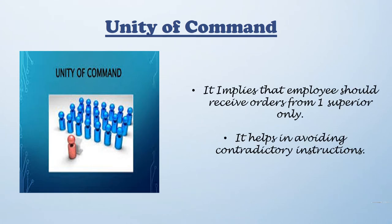Unity of command implies that an employee should receive orders from one superior only. There should be one superior giving instructions to subordinates. If an employee receives orders from more than one person, they will remain in a state of confusion. To avoid such situations, Fayol focuses that there should be one superior giving instructions. This results in systematic management, increased employee efficiency, and increased output.